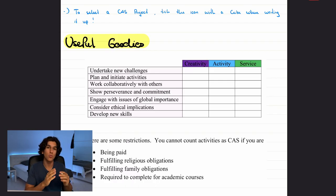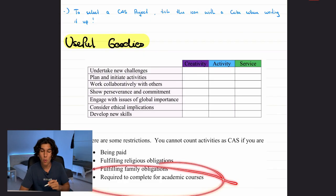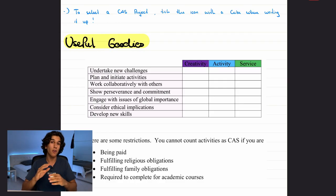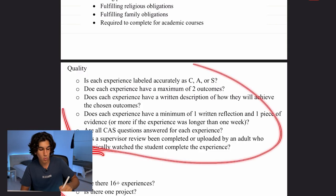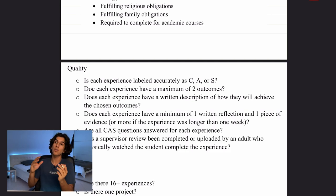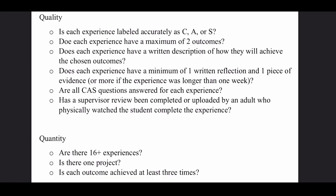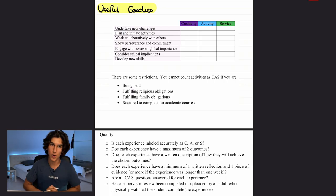There are a few things you cannot do for a CAS experience: if you're being paid for it, if you're fulfilling religious obligations, fulfilling family obligations, or if you're required to complete it as part of your academic course. CAS needs to be initiated and planned by you — it is not part of your school academic courses. Finally, here are qualitative and quantitative checklists. Make sure your CAS portfolio hits every single point. These last three resources were taken from our school's CAS FAQ document — massive shoutout to them.